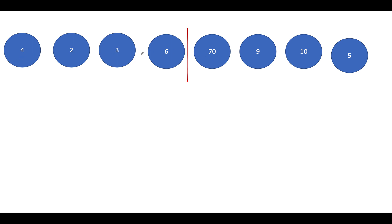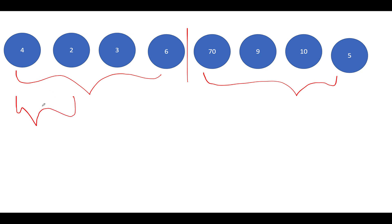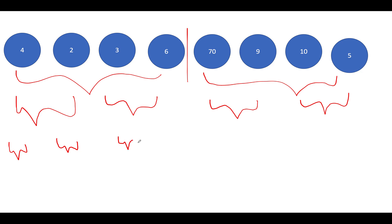In merge sort, we divide the entire array into two parts. The current length is 8, so each part has length 4. We then recursively invoke the same merge sort algorithm on both parts, dividing them again and again, until all sub-parts contain individual elements of size 1.